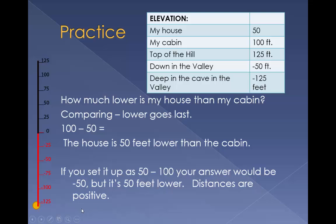How much lower is my house than my cabin? Comparing, lower goes last. The house is 50 feet lower than the cabin. If you set it up as 50 minus 100, your answer would be 50. But it's 50 feet lower. Distances are positive.